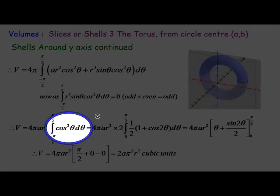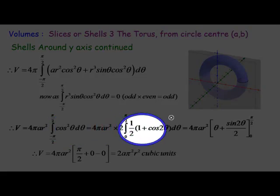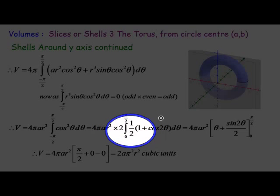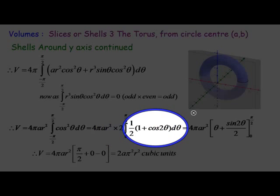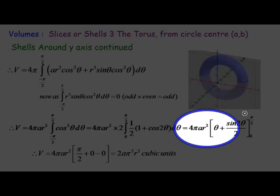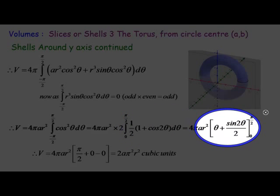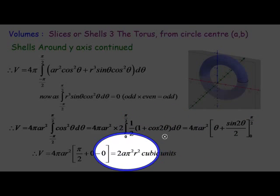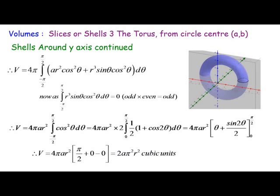Hopefully we know from experience with integration that we have to do the cos² substitution: ½(1 + cos 2θ). Eventually we get 2Aπ²R² cubic units. Shelling around the Y-axis gives the same result as slicing around the Y-axis, as we would expect.